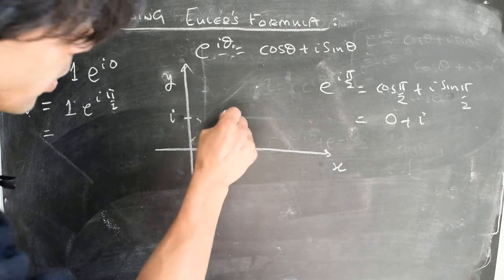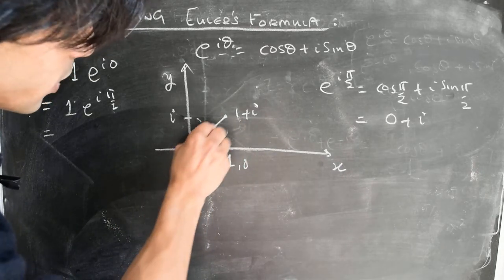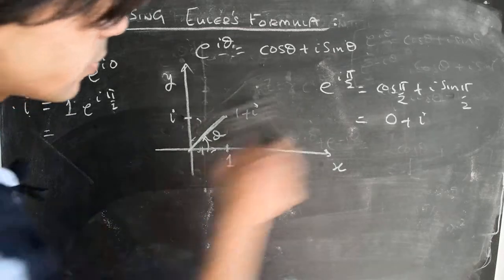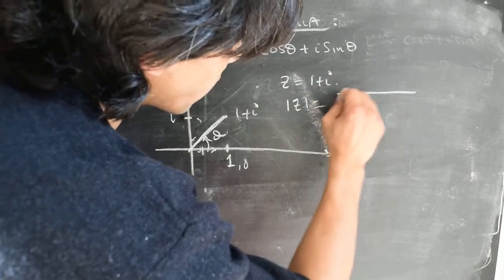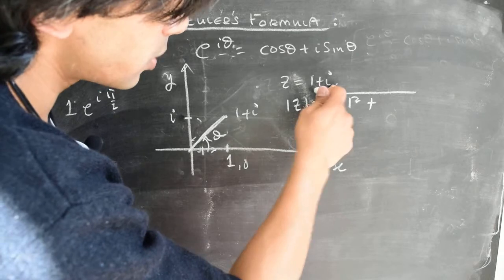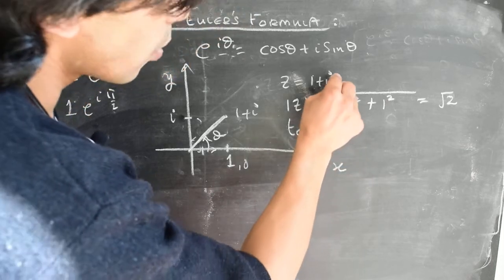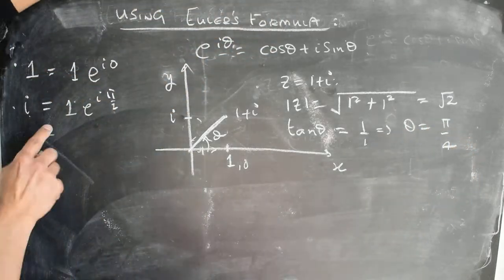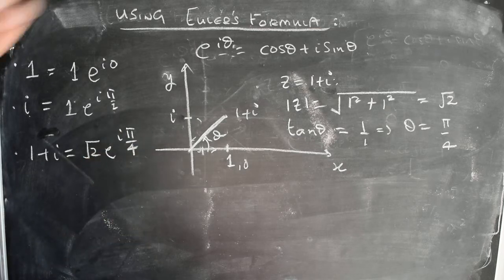Let's try another example: the point 1 plus i. We need to find its magnitude and argument theta. The magnitude of z = 1 + i is the square root of 1 squared plus 1 squared, which is square root of 2. The angle: tangent of theta equals 1 divided by 1, therefore theta is pi over 4. So the point 1 + i can be represented in polar form as square root(2) · e to the power i·pi/4.